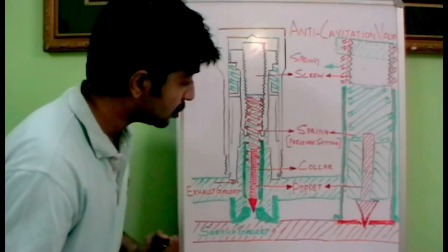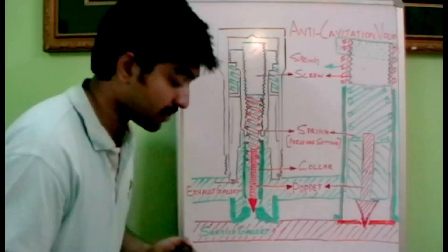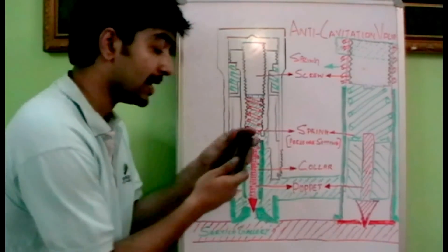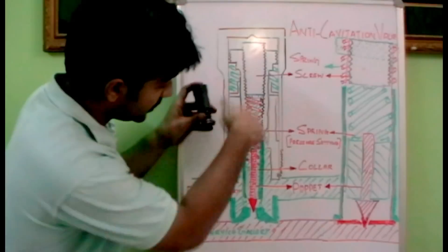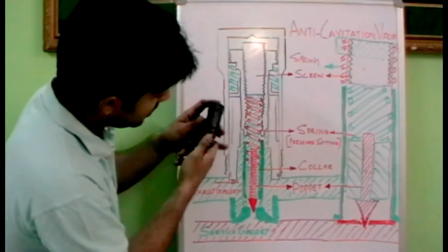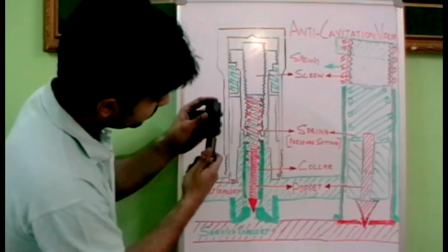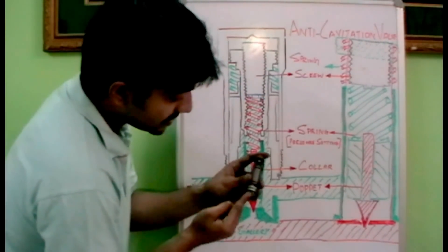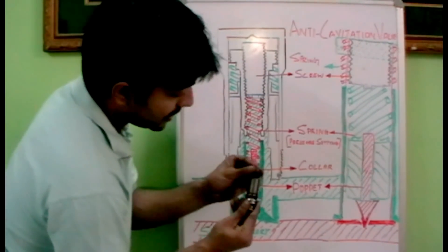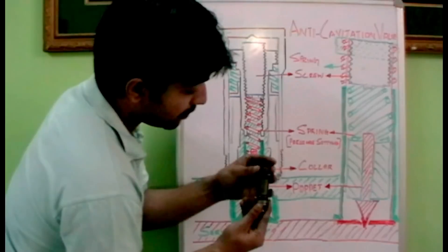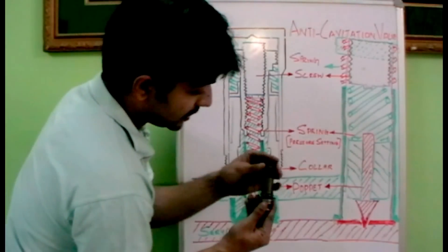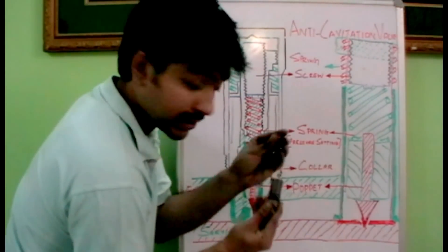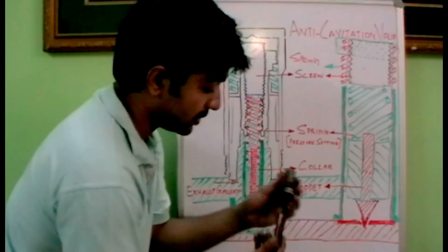So please refer to the relief valve function video. We have an auxiliary relief valve over here — let's open it up. So this is the unit; we are opening the relief valve. Let's open the nut and take the unit inside out.